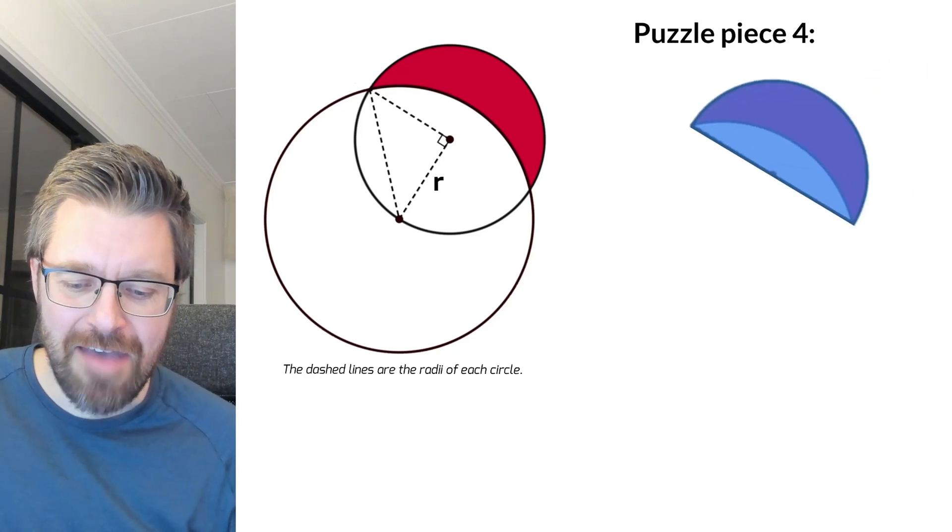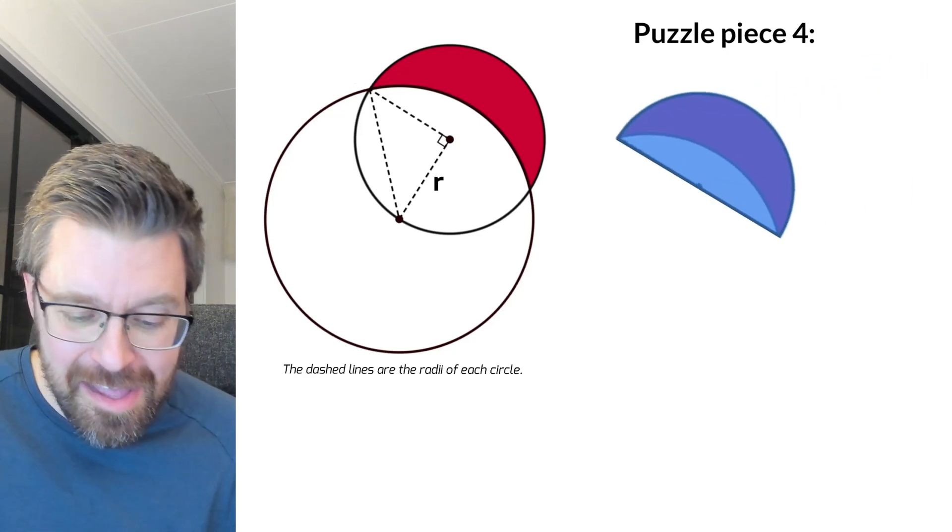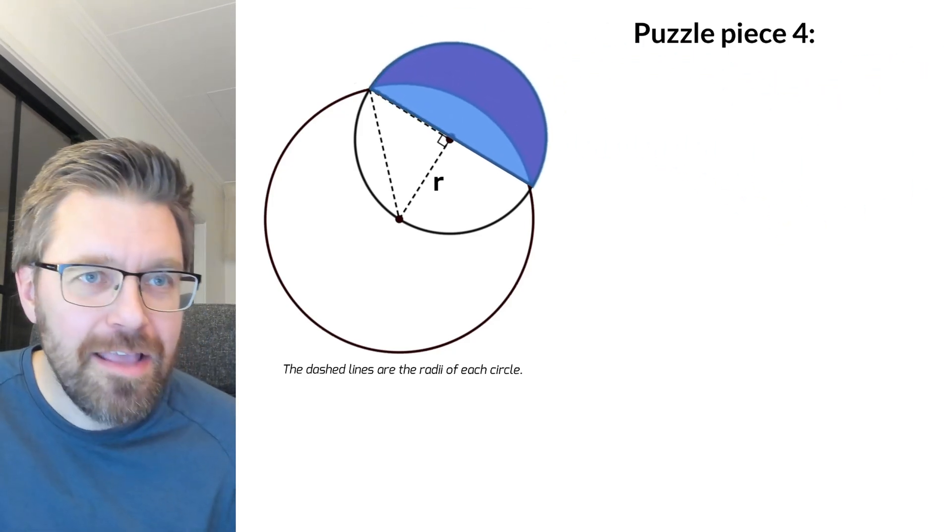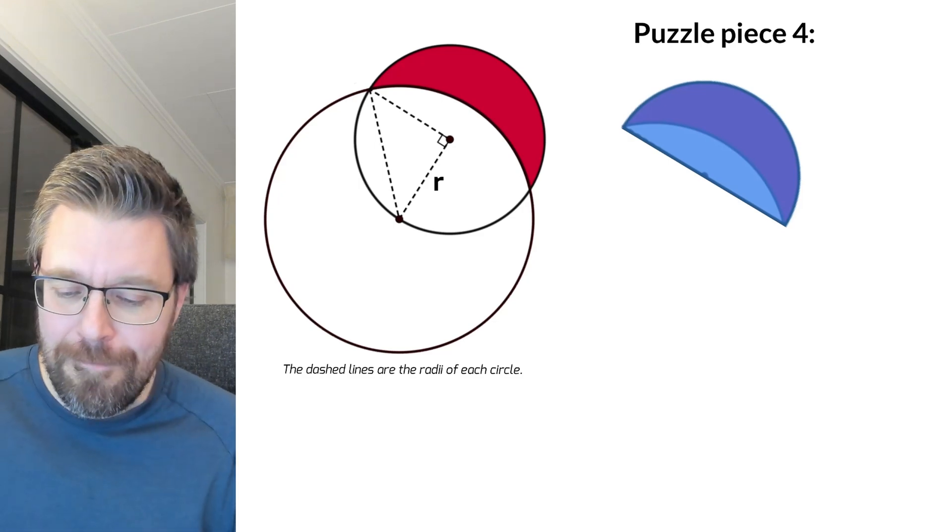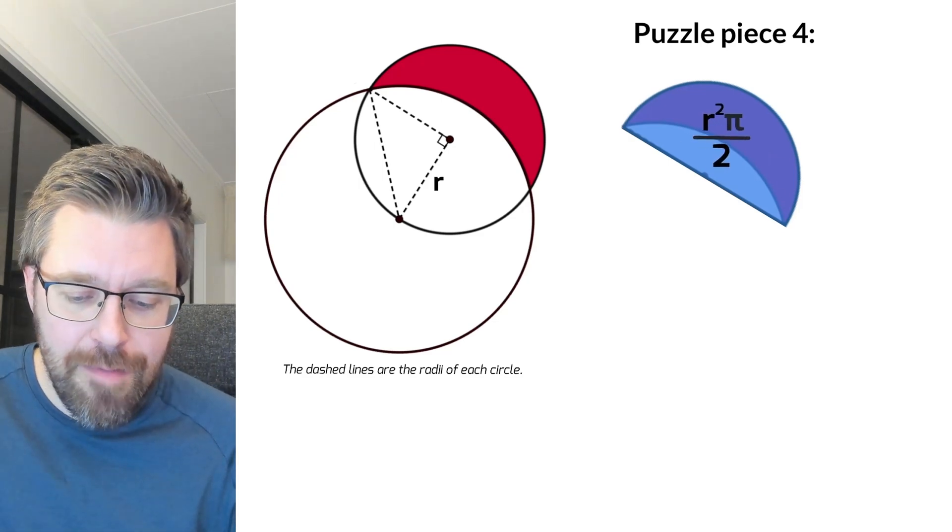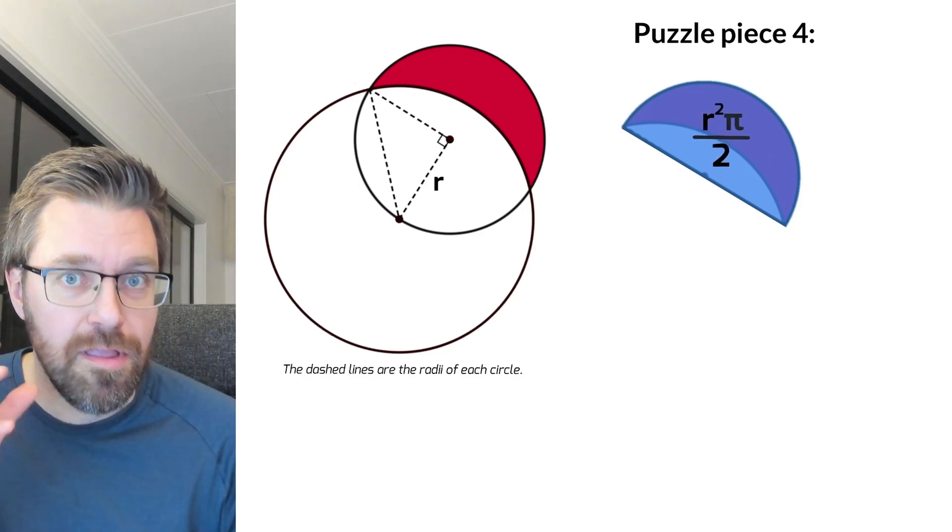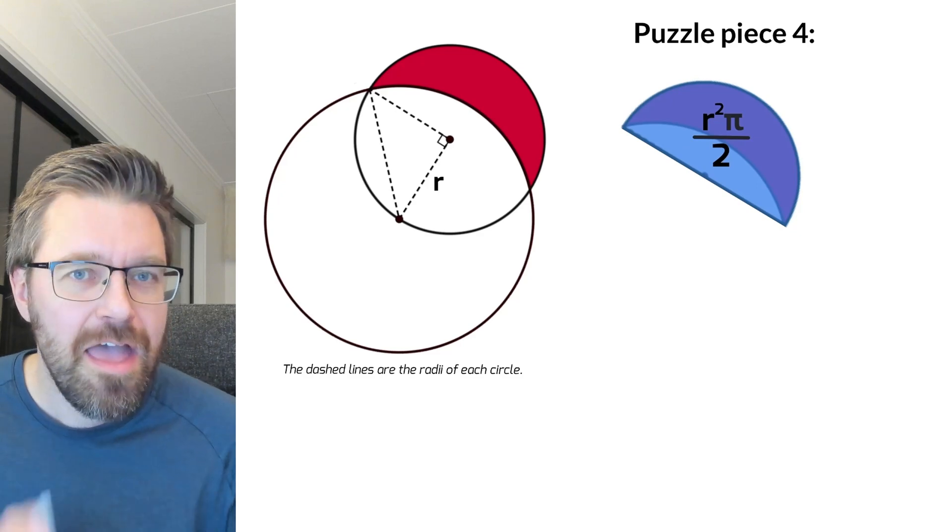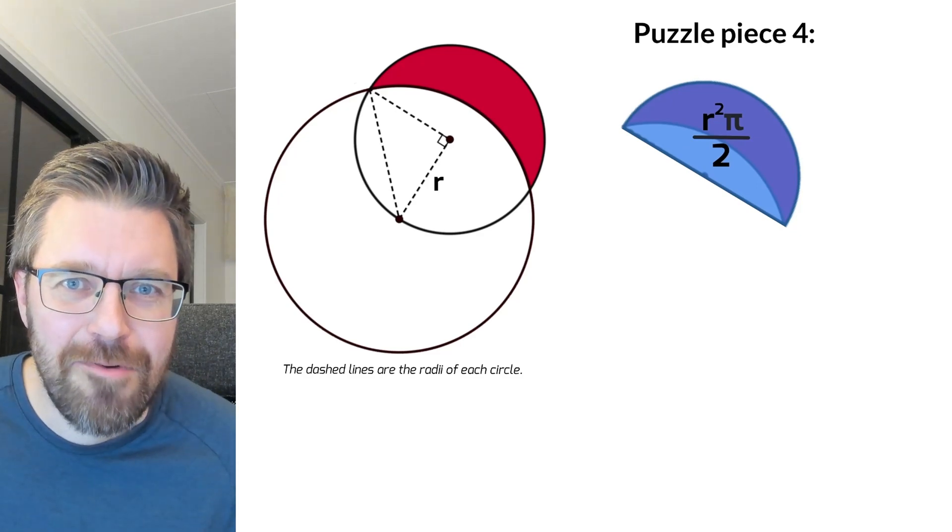Have you figured out yet what I should do with these puzzle pieces? The next piece has a blue color and this fits very well right here. The area is simple and it's r squared pi divided by two because it's a half circle. So I write it instantly right here.